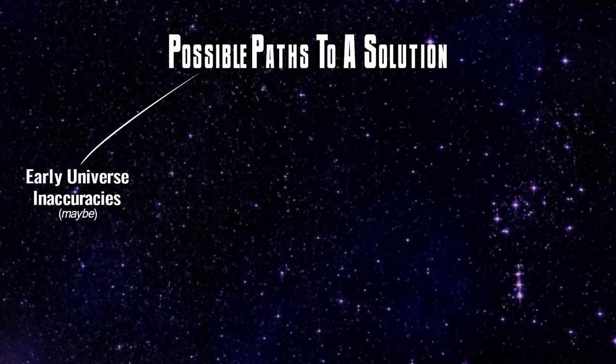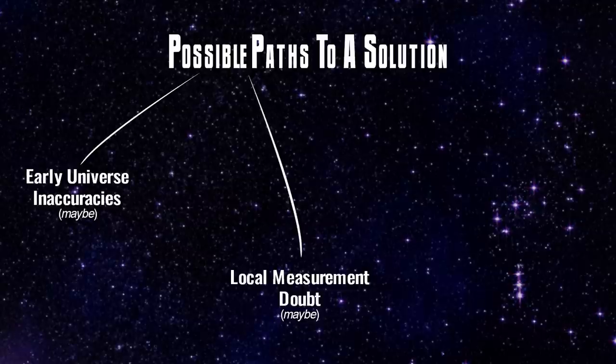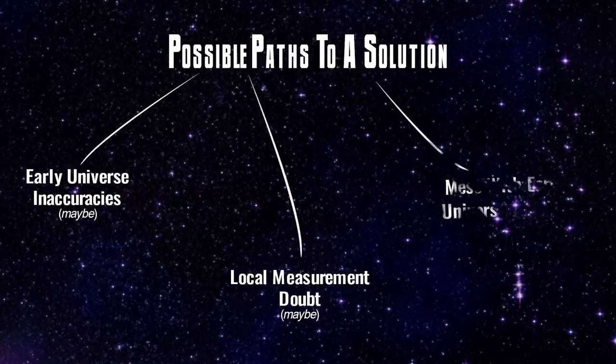Or you can say there's something we don't understand about local measurements — maybe it's more difficult to measure the Hubble constant than we thought, but this has to be a systematic problem. You can't just point to supernova and say the results are wrong, because you can also get the tension when you just look at Mira variables. Another idea is to mess with early universe physics — maybe there are extra neutrino flavors, or an early form of dark energy that did something weird and then went away. But it's really hard to change early universe physics without causing other contradictions.